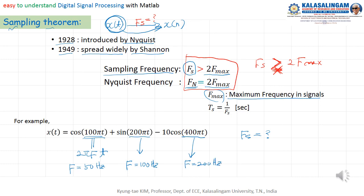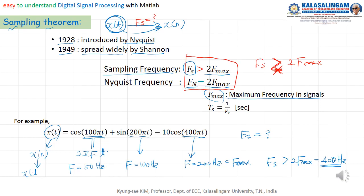Therefore, the maximum frequency F-max is 200 Hz. Therefore, Fs must be greater than two times of F-max, which means greater than 400 Hz. At that point, we can choose the sampling frequency to be more than 400 Hz. Then we can convert X of t to X of n, and also from this we can recover X of t.